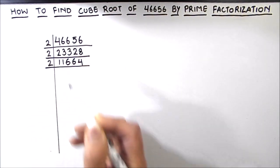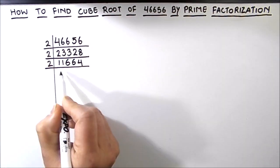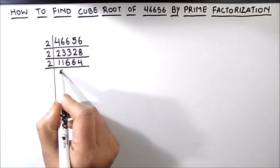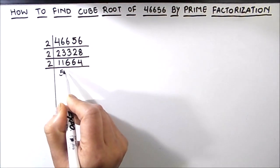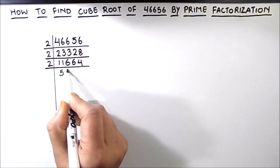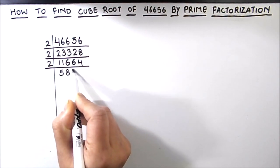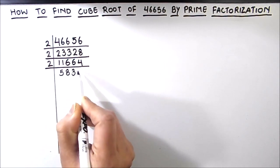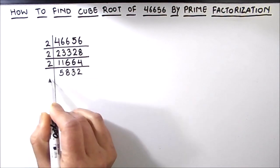Whenever the number is even, we are going to use 2 as the divisor. Now 2 times 5 is 10, 1 will be remainder, this becomes 16, 2 times 8 is 16, then 2 times 3 is 6 and 2 times 2 is 4.